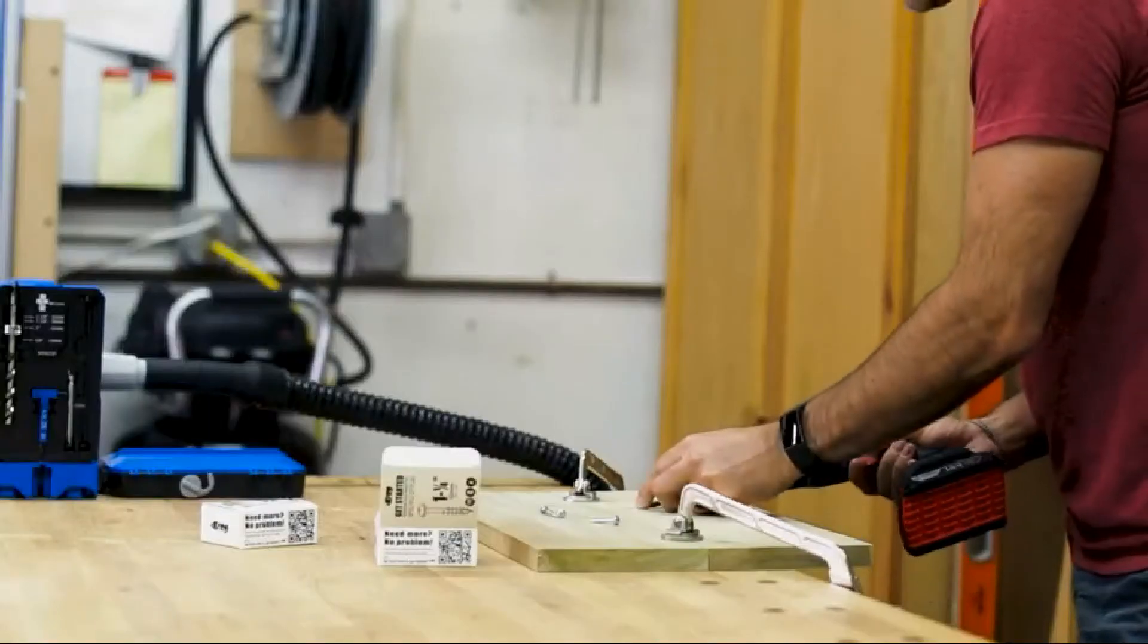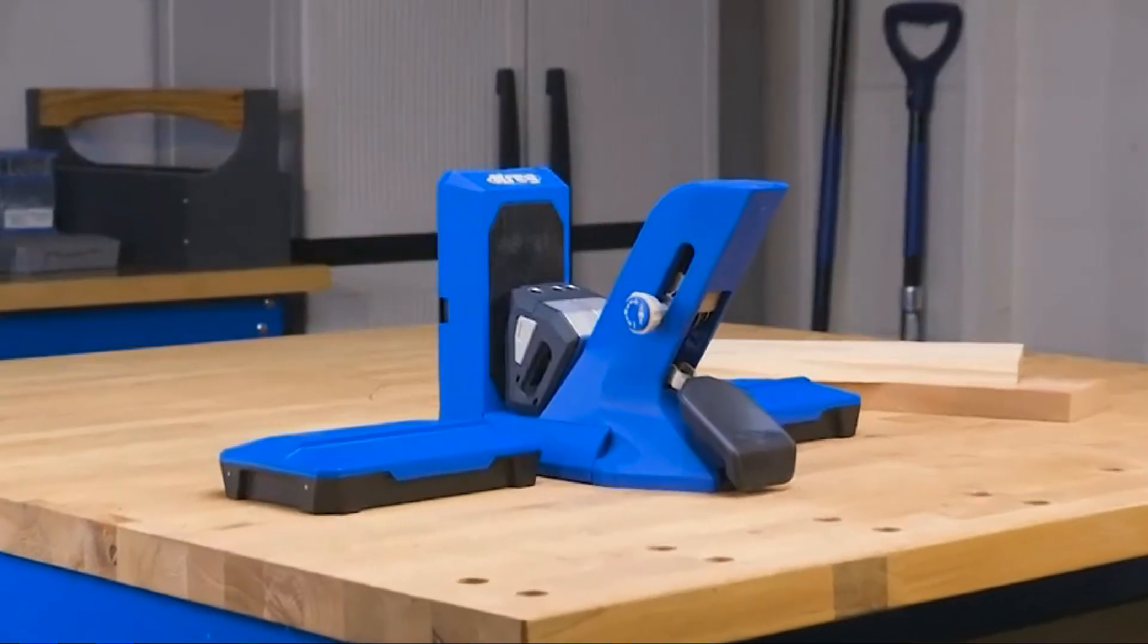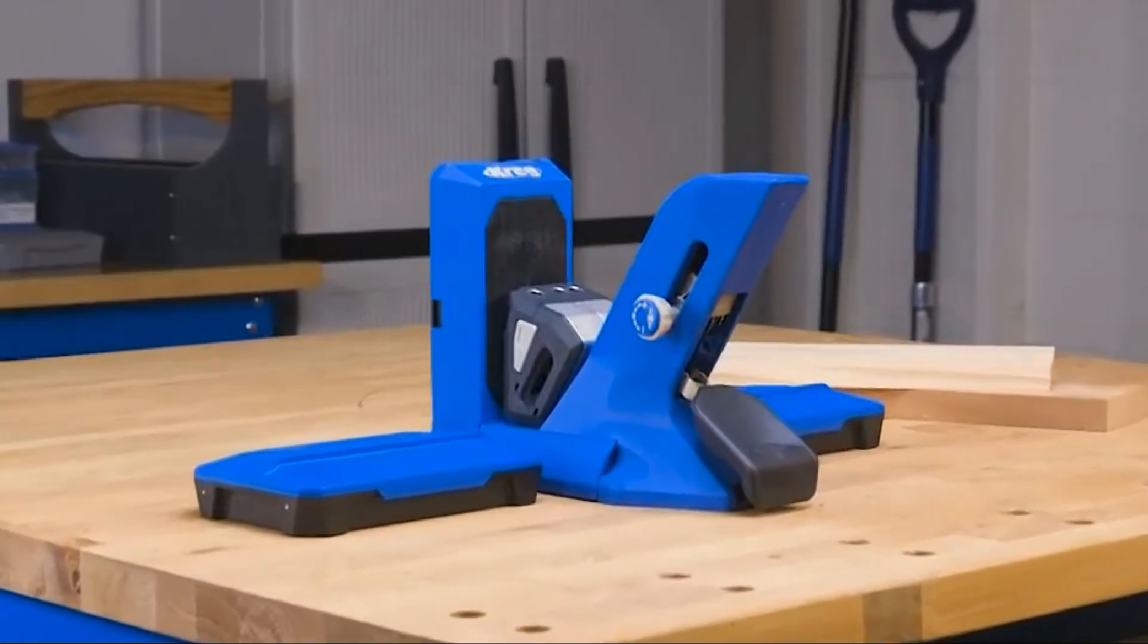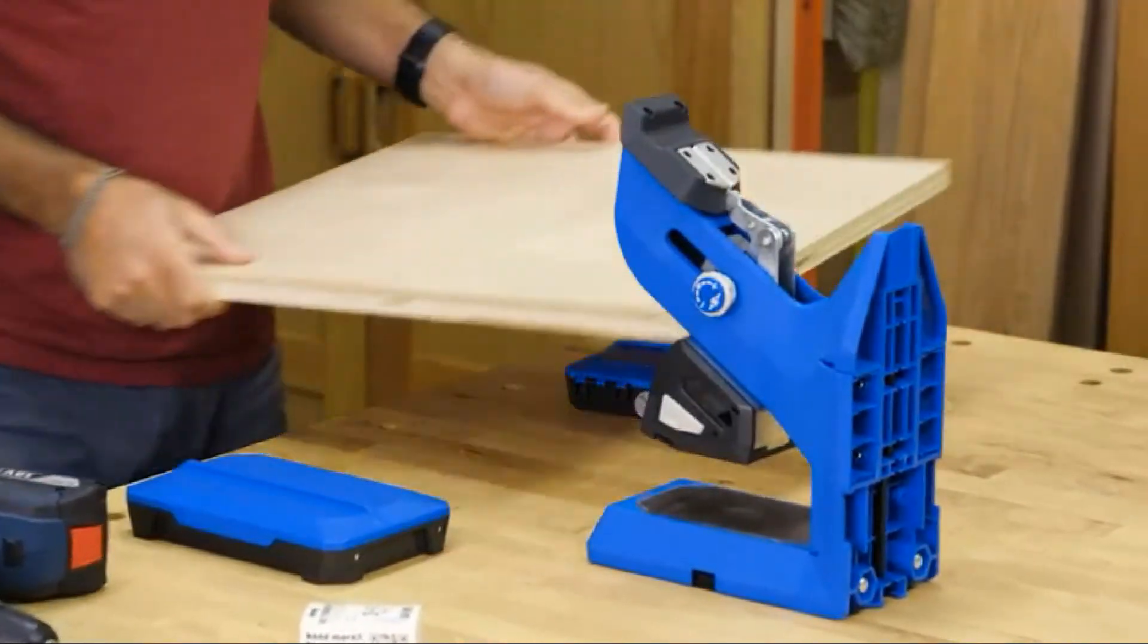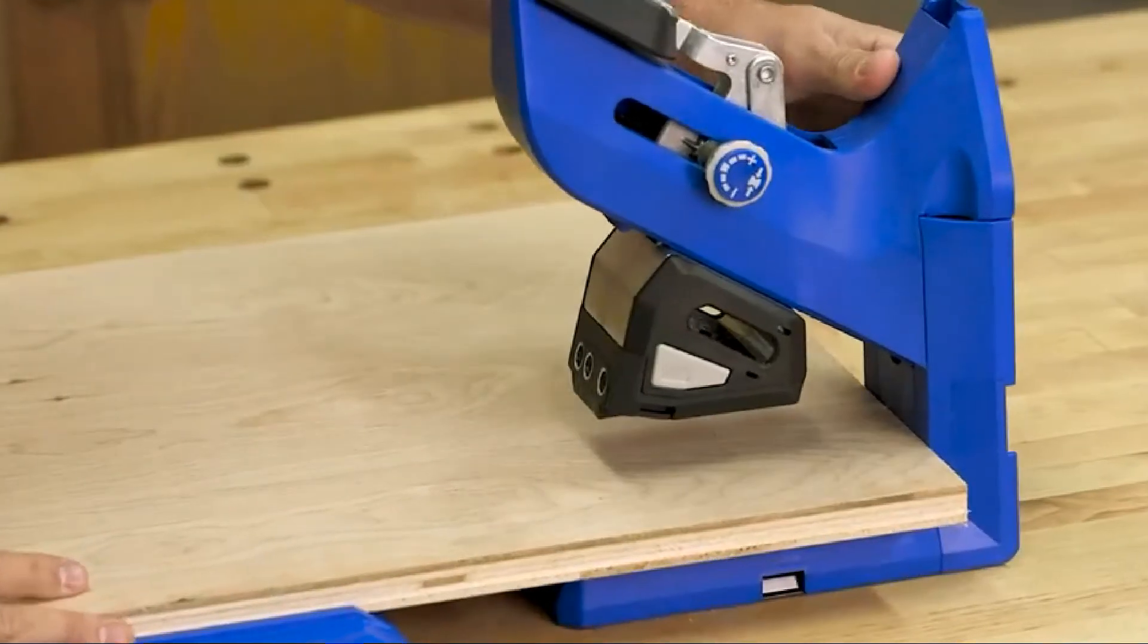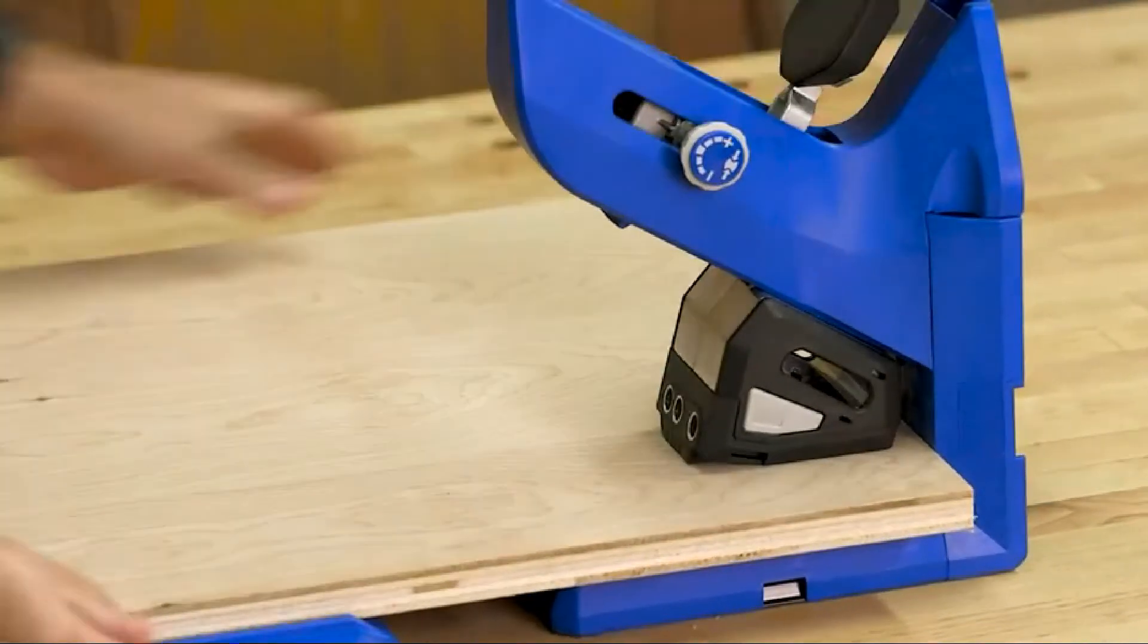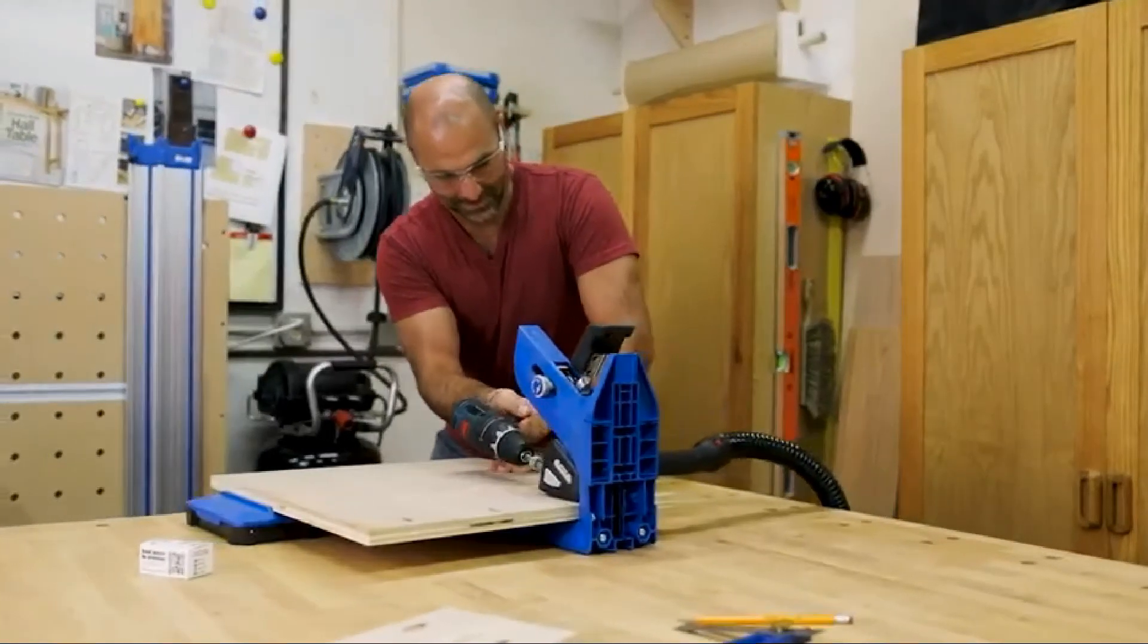With the docking station, the pocket hole jig 720 Pro is the ultimate benchtop pocket hole workstation. When you want to reconfigure the 720 Pro to work with materials of different sizes and shapes though, you can remove the jig from the docking station. That allows you to use the jig vertically or horizontally, so you can rotate it 90 degrees and drill pocket holes in either position.